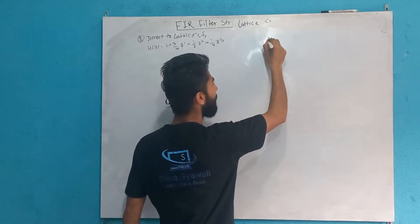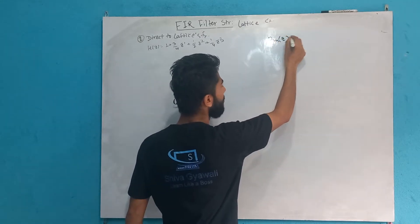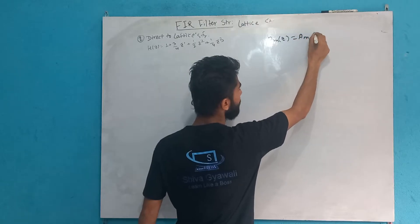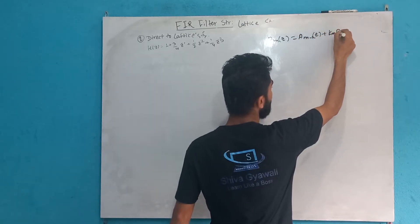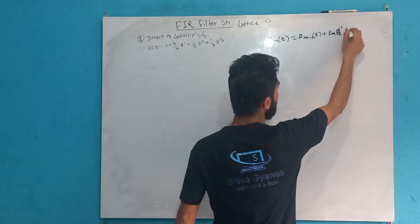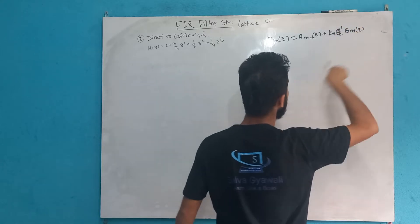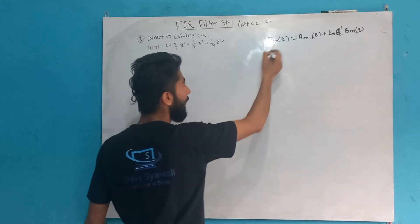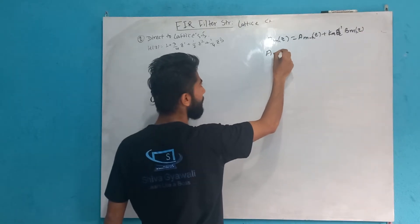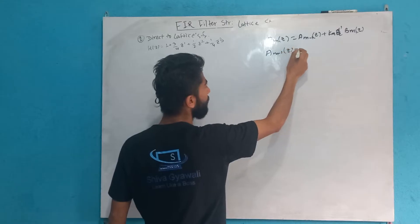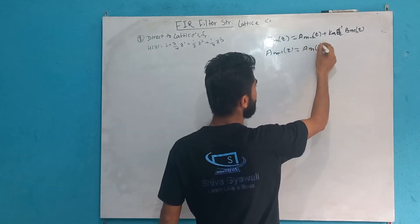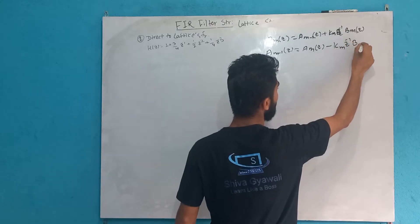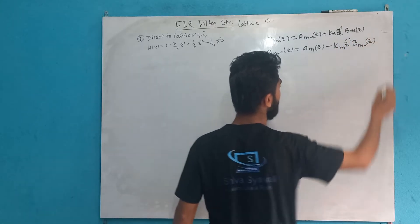I am going to show you the formula. The formula is: A_m(z) = A_{m-1}(z) plus k_m * z^{-1} * B_{m-1}(z). And B_m(z) = A_{m-1}(z) minus k_m * z^{-1} * B_{m-1}(z).